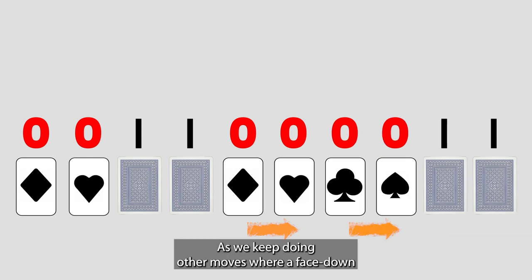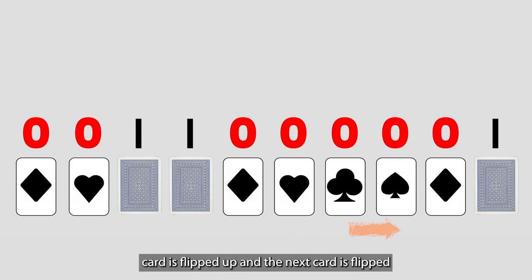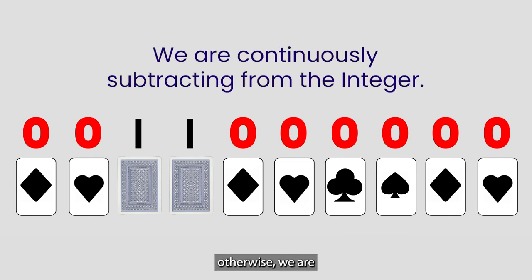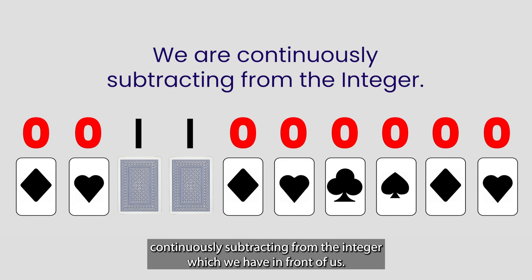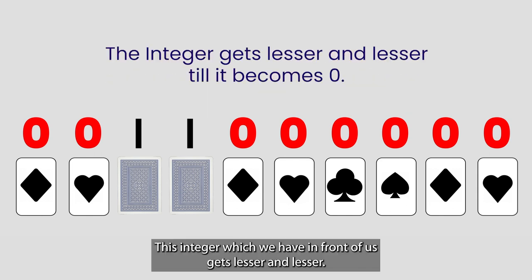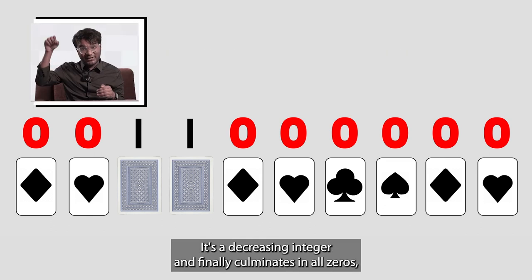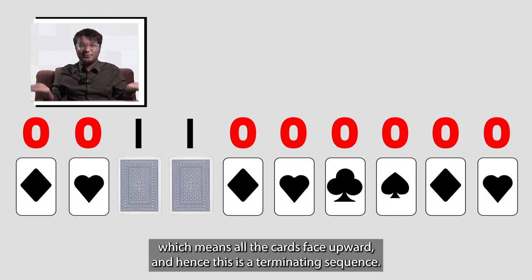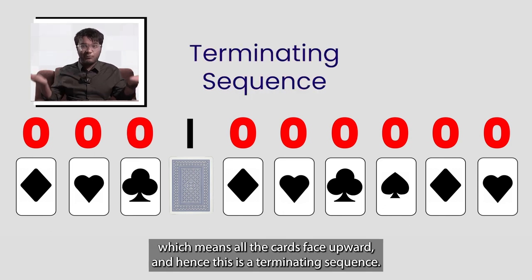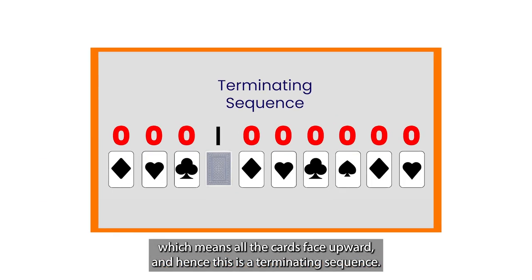As we keep doing other moves where a face down card is flipped up and the next card is flipped otherwise, we are continuously subtracting from the integer which we have in front of us. This integer gets lesser and lesser. It's a decreasing integer and finally culminates in all zeros, which means all the cards face upwards. And hence, this is a terminating sequence.